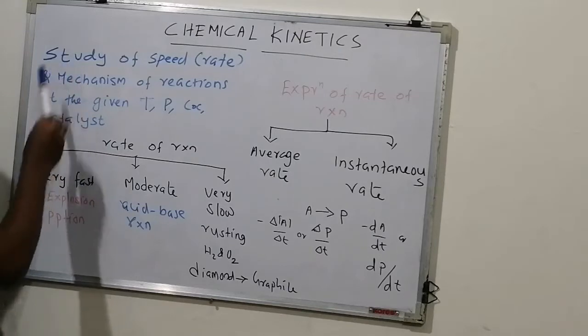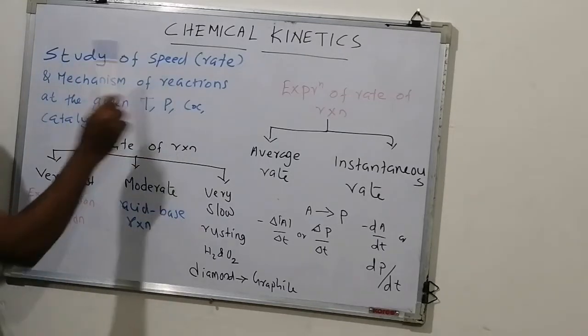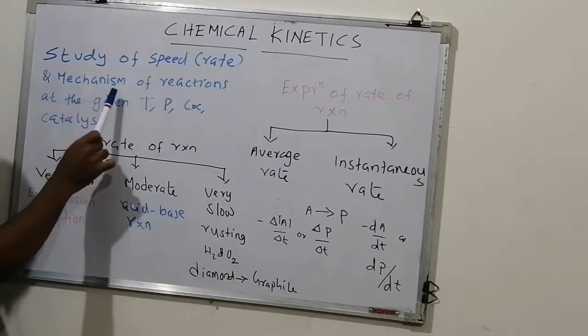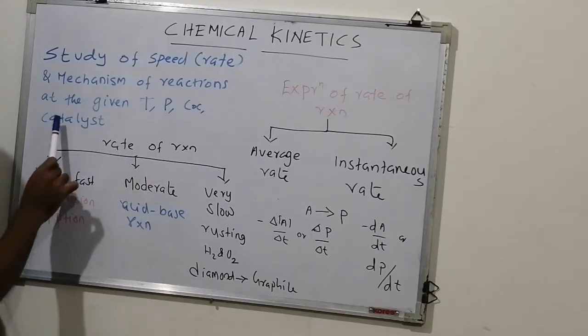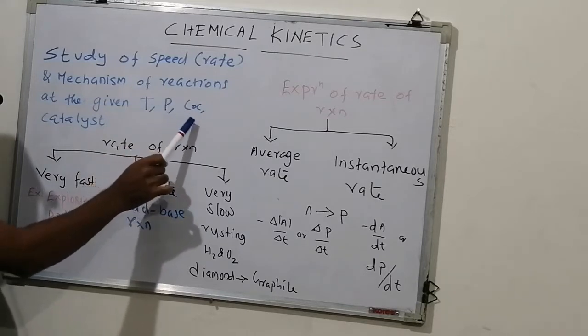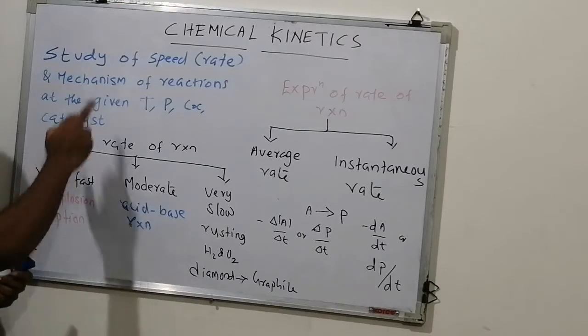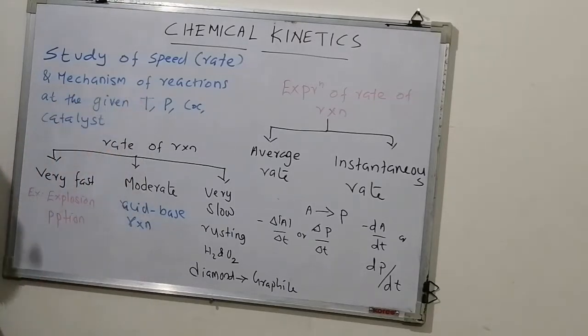Look at the definition of chemical kinetics. It is the study of speed, now we will use the word rate, and mechanism of reactions at the given temperature, pressure, concentration and catalyst etc. Therefore, it is the study of speed and mechanism of reactions.